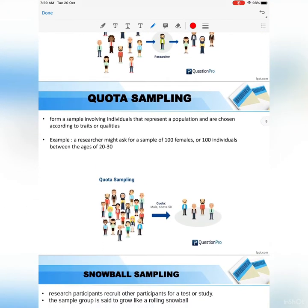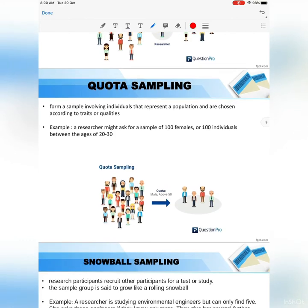For quota sampling, you form a sample involving individuals that represent a population, chosen according to traits or qualities. For example, the system might ask for a sample of 100 females, all between the age of 20 to 30. So we have a target sample to represent a population — that is quota sampling.